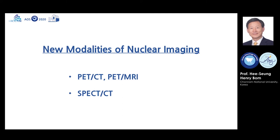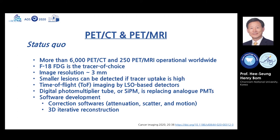Currently, more than 6,000 PET-CT and 250 PET-MRI scanners are operational worldwide, and F18-FDG is the tracer of choice. Image resolution of current PET-CT or PET-MRI is 3 mm; however, even smaller regions can be detected if tracer uptake is high. Current technologies include time-of-flight imaging, digital photomultiplier tubes, and software for correction and reconstruction.